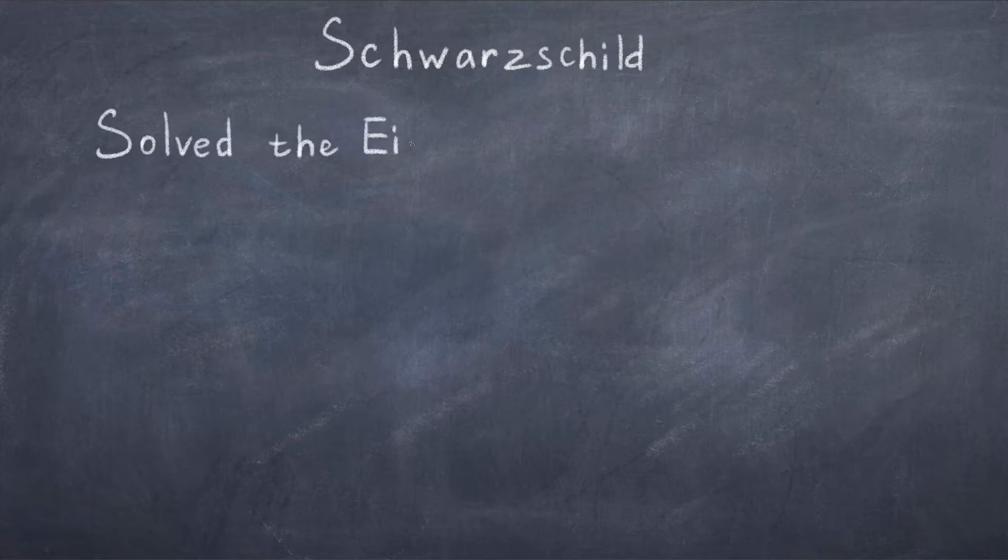In cosmology we are often interested in the Friedman solutions to the Einstein field equations, but there are many other solutions, and Friedman was not the first one to come up with a solution. That achievement goes to Carl Schwarzschild, who came up with the first exact solution in 1916, just one year after Einstein published his theory.